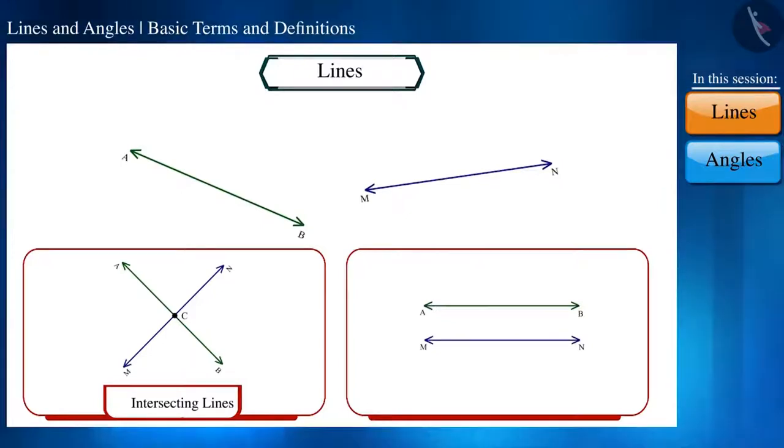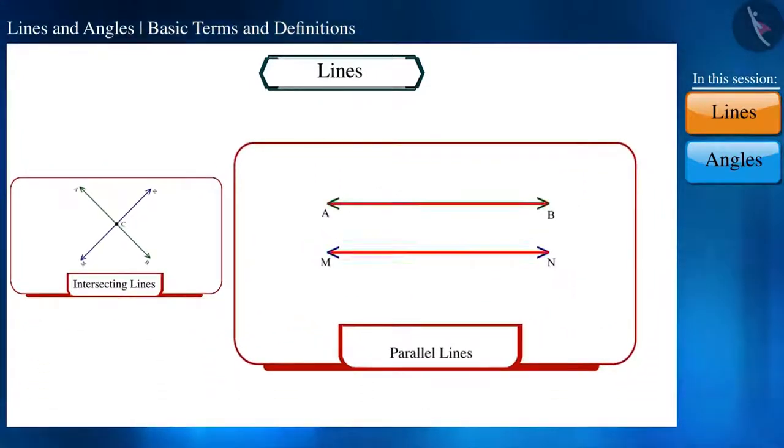And second, that which do not intersect each other. That is, they are parallel to each other. The length of the common perpendicular on the different points of these two parallel lines will be the same.